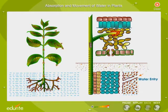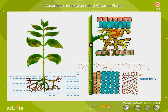Absorption and movement of water in plants. The upward movement of water from the root to the top of the plant is called ascent of sap.